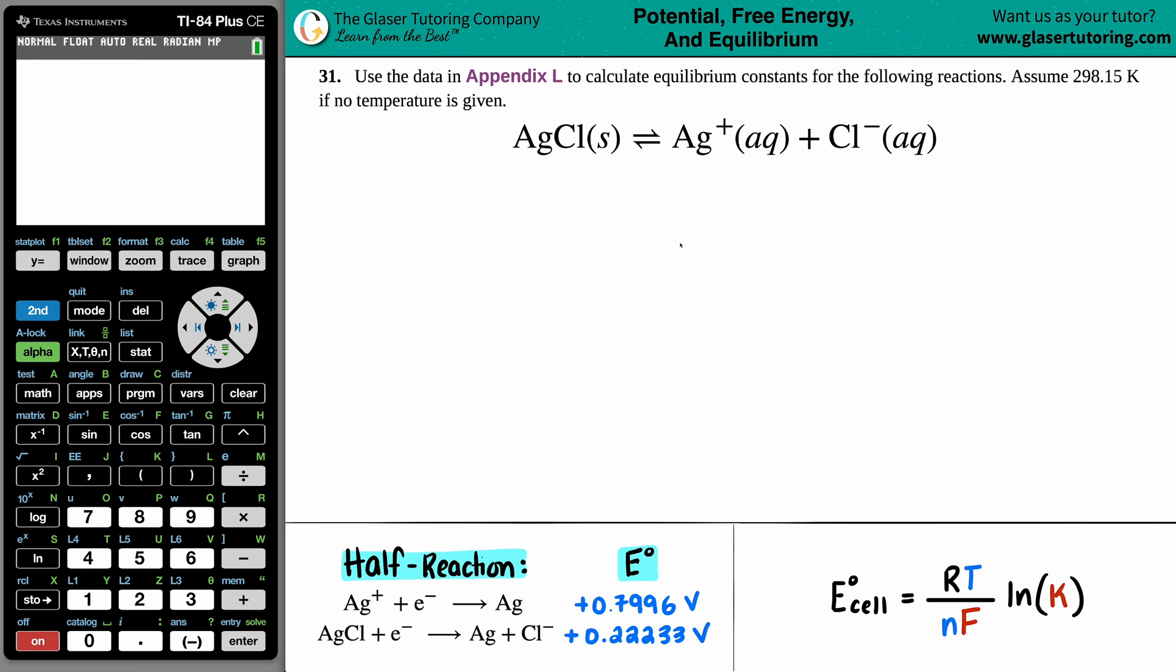Number 31, using the data in Appendix L to calculate equilibrium constants for the following reactions, assume 298.15 Kelvin if no temperature is given. Okay, so we have this balanced equation. We have to find the equilibrium constant of AgCl solid, which will yield Ag plus aqueous plus Cl minus aqueous. Now we're only allowed to use Appendix L values.